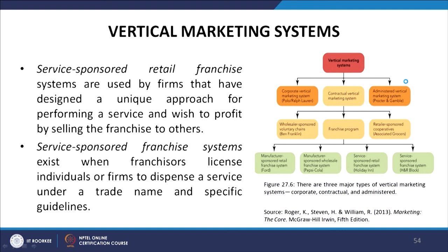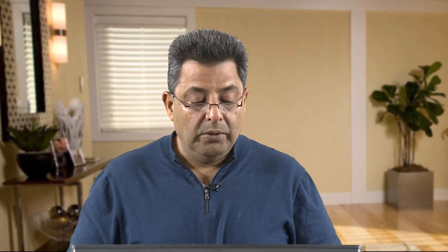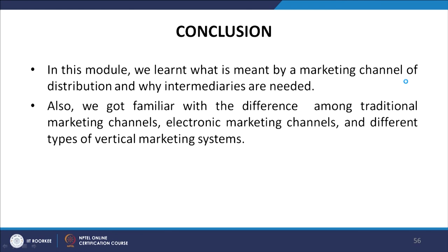Service-sponsored franchise systems exist when franchisors license individuals or firms to dispense a service under a trade name and specific guidelines. In comparison, administered vertical marketing systems achieve coordination at successive stages of production and distribution by the size and influence of one channel member rather than through ownership. Procter and Gamble, given its broad product assortment ranging from disposable diapers to detergents, is able to obtain cooperation from supermarkets in displaying, promoting, and pricing its products. In conclusion, this module covered what is meant by a marketing channel of distribution, why intermediaries are needed, and the differences among traditional marketing channels, electronic marketing channels, and different types of vertical marketing systems.